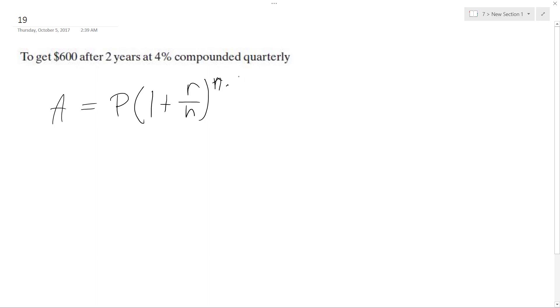n, the number of times compounded per year, times the total number of years. So in this case, we have our total amount, but we're looking for the principal.